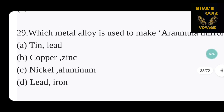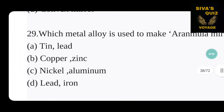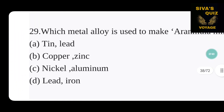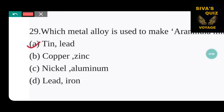Which metal alloy is used to make a mirror? Option A is tin and lead, B is copper and zinc, C is nickel and aluminium, D is lead and iron. The correct answer is option A — tin and lead is the right answer for the metal alloy used to make a mirror.